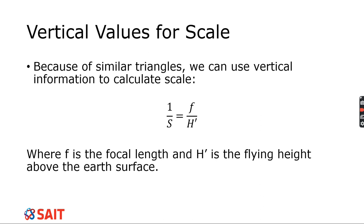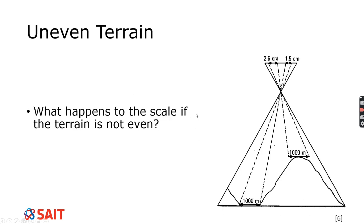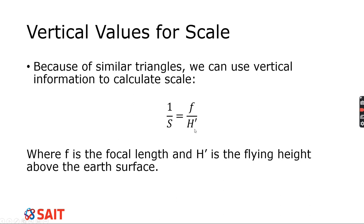Another way to calculate scale uses the benefit of similar triangles. We can use a ratio of the negative plane to the focal point with respect to the focal point and the flying height above the ground. To find the scale, we use that vertical information: f is the focal length, and h prime is the flying height above the earth's surface. To find s, we take the flying height, multiply by one, and divide by the focal length of the camera.